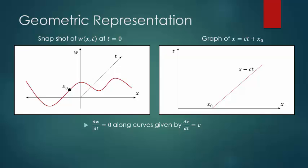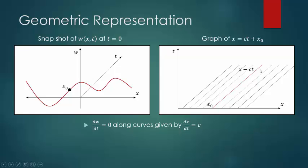Here is a geometric representation of what's going on. The first picture is a snapshot of w(x) at time t equals zero — our initial condition. We plop some point x₀ on this graph, and then use the formula x equals c·t plus x₀, where this slope is 1/c. Since w is increasing at that constant c, w is going to be constant all along that line. If we draw all these lines with the same formula, they all increase by that constant c, so all of them have the same constant value for w, which is our original wave.